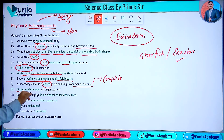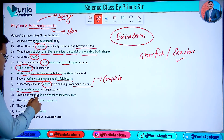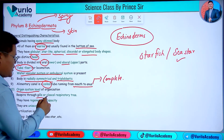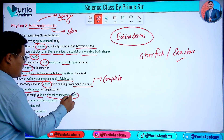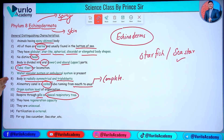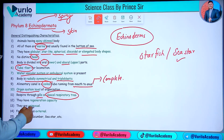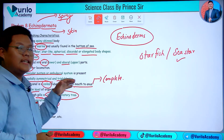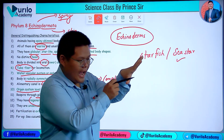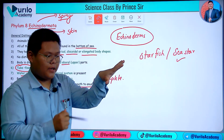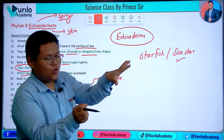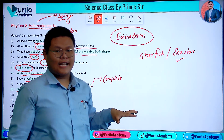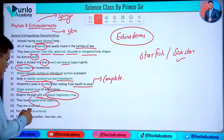The organization is at the organ system level. Respiration occurs through gills and a cloacal respiratory tree. Echinoderms have a large regeneration capacity — for example, a sea star can regenerate.